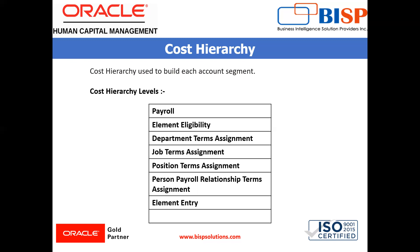You might need it to override the activity or natural account segment that is usually enabled at the element level. And last is the element entry — select element entry to overwrite all other levels, with one exception: costing at the element entry level is overridden by the segment defined for the priority account for that element. You might select the segment for the cost center.